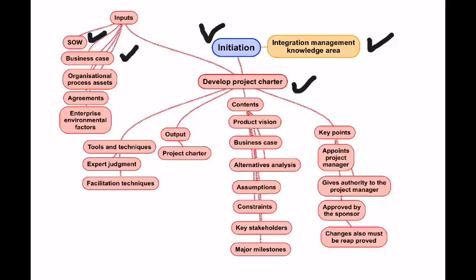We should also know the Organizational Process Assets we may be using for the project, like any reusable component, any intellectual property, or lessons learned from past projects. Then there are the agreements signed between the customer and the supplier — any sort of agreement signed with respect to this particular project can act as an input.